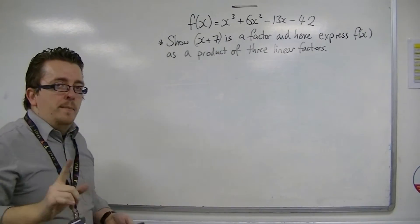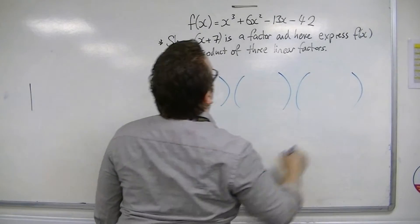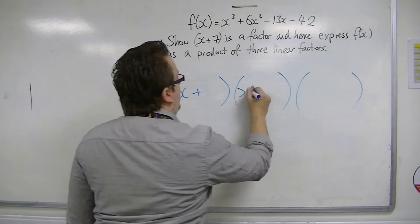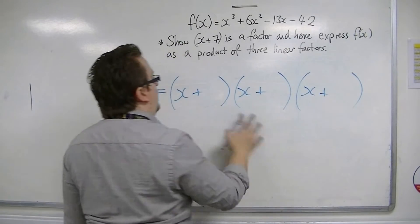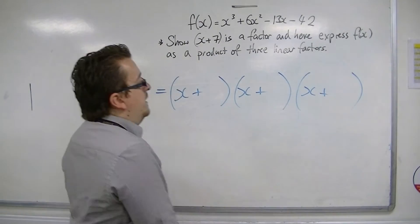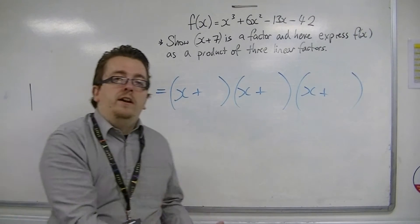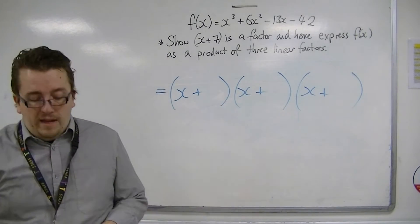And what that means is that we want to completely factorise this cubic, so I get x plus something times x plus something times x plus something else. These are all linear, they are all factors, and I'm multiplying them together, so effectively they are a product.